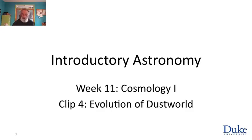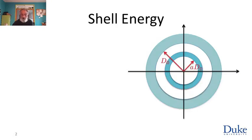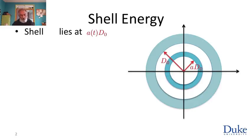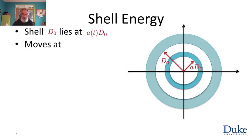Back to our expanding shells of dust. Here's our favorite shell — here it is at time d₀, and here it is in the past, when it was closer to us. What we're going to do is compute the energy of this object. At time t=0 it's at distance d₀; in the past it was closer, and this shell is moving.